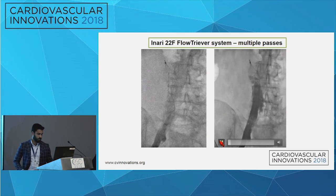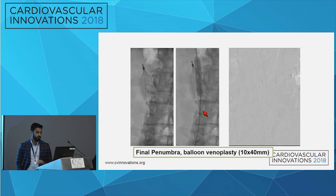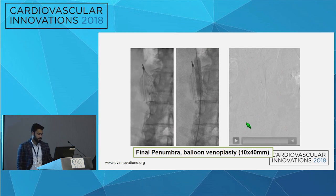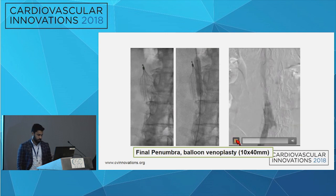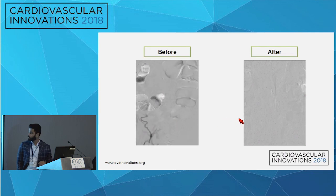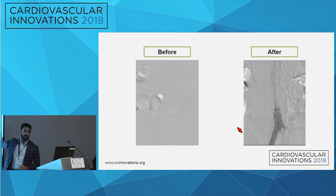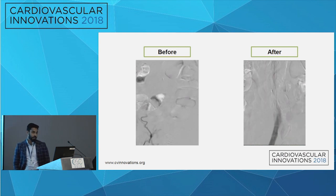We did multiple passes through the right femoral vein with the Inari, then did another round of Penumbra from the right femoral vein, and finished with a balloon venoplasty using a 10 by 40 millimeter balloon. Our goal was to establish reflow into the IVC. Starting from the beginning, there was really nothing going into the IVC — and after the procedure, you can see some flow across the filter and into the IVC.